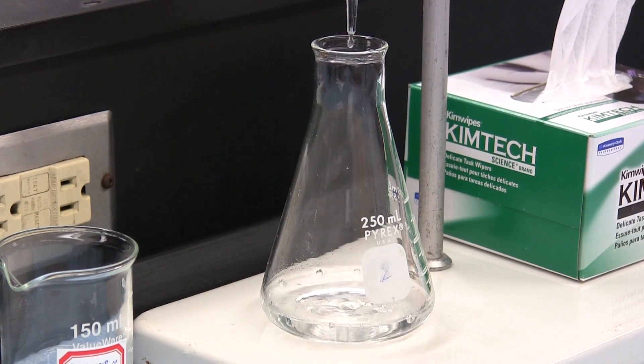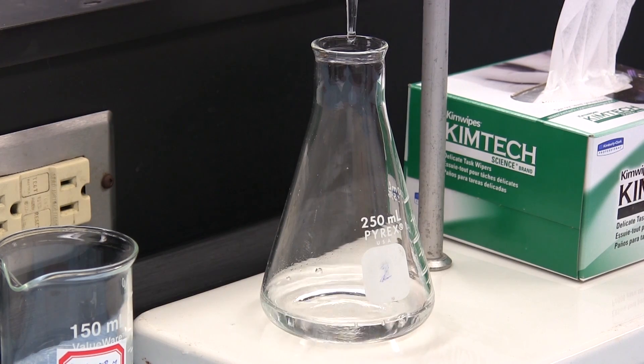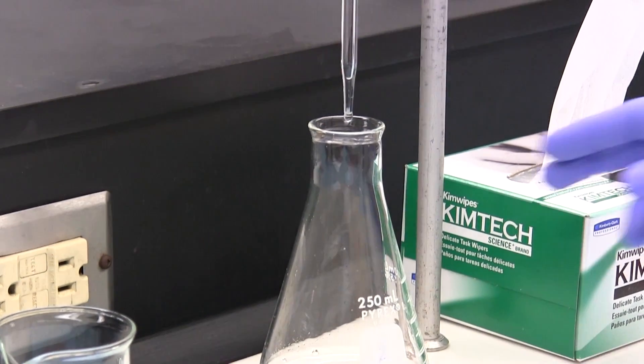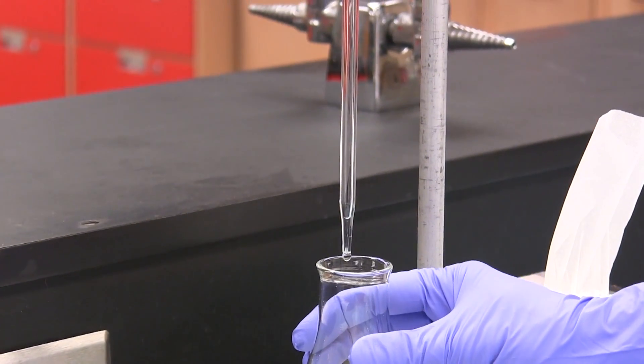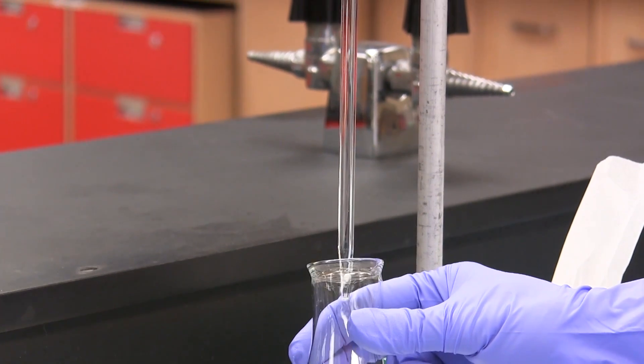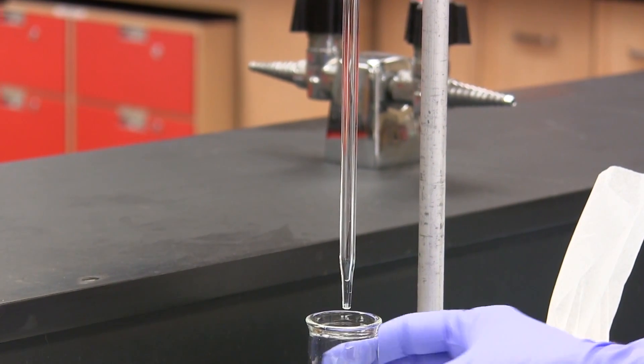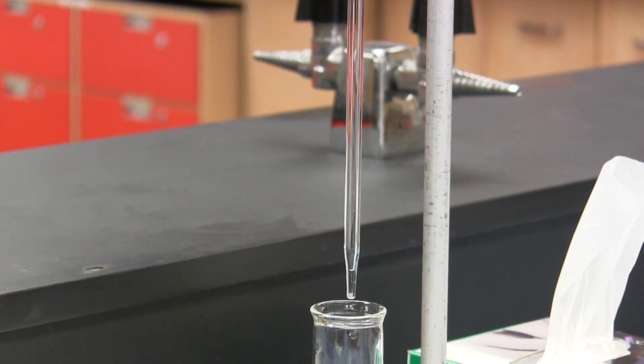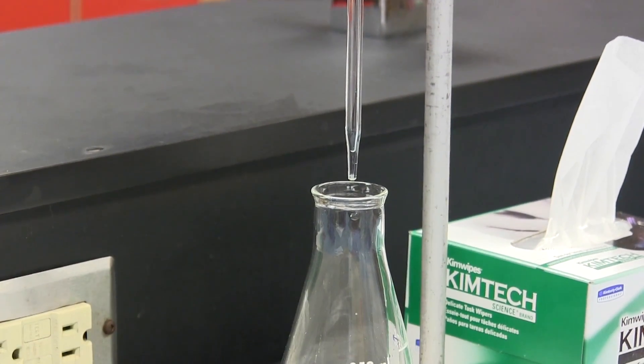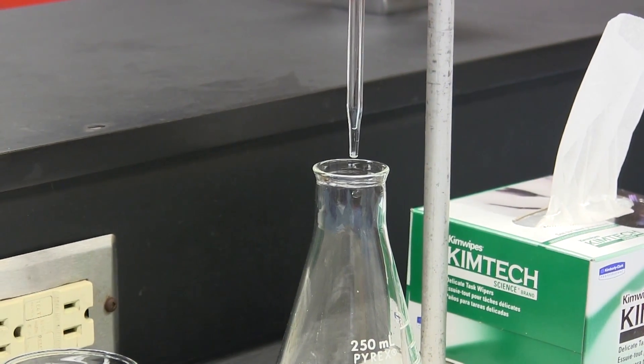When the pipette is finally drained touch the tip quickly against the inside of the receiving vessel to dislodge any droplet hanging from the tip. The transfer is complete and we can be sure that 25.00 milliliters of the liquid have been transferred to the receiving vessel.